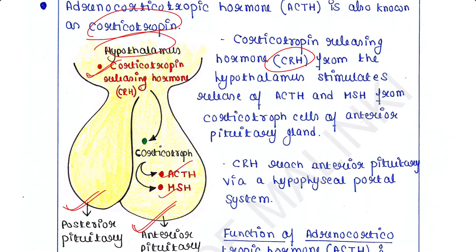Corticotropin releasing hormone reaches the anterior pituitary to stimulate corticotropes to secrete ACTH and MSH through the hypophysial portal system. I have already talked about the hypophysial portal system in one of my previous lectures — if you haven't seen that lecture, I would highly recommend it; the link is provided in the description box.